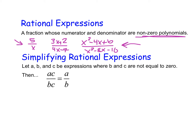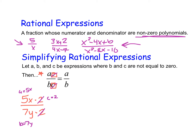By definition, let a, b, and c be expressions where b and c are not equal to zero. If you have something like 5x times 2 over 7y times 2, then a equals 5x, b equals 7y, and c equals 2. Because both the numerator and denominator are multiplied by the same value c, we can cancel that common factor and simplify this to 5x over 7y.